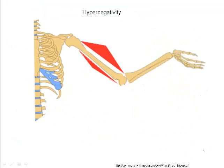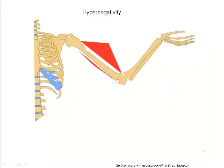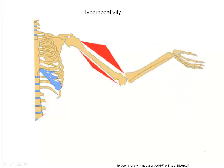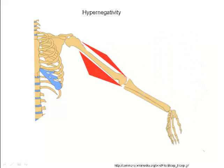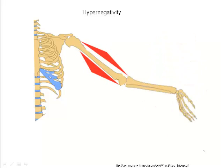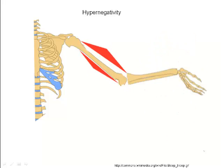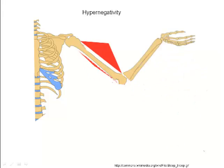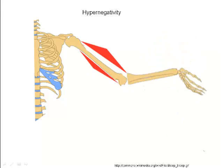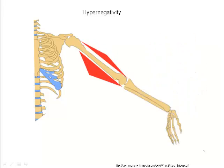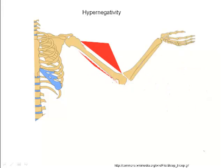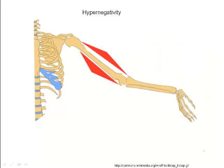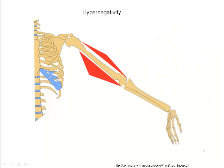The third phenomenon we'll take a look at is hypernegativity. Antagonistic muscles such as the biceps and triceps work in opposition to each other. When the biceps is contracting, the triceps are relaxed and vice versa. This is necessary for coordinated movement. If both muscles contracted simultaneously, no movement would occur. The nervous system makes coordinated movement possible by making some neurons hypernegative.